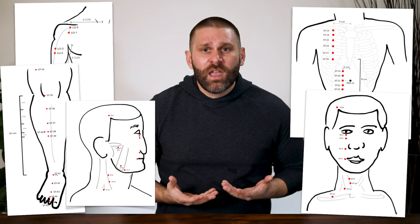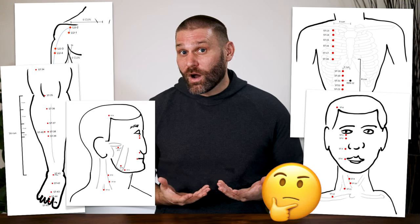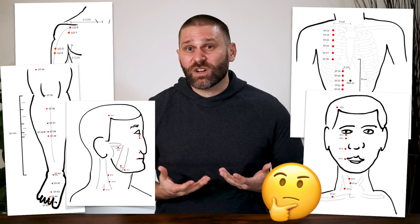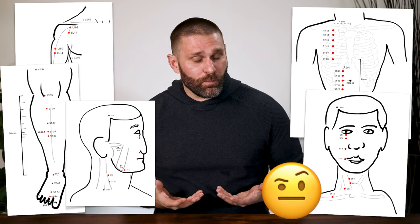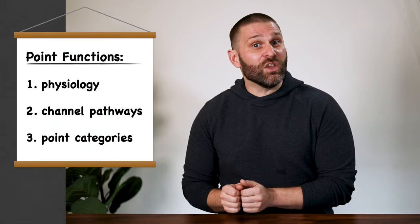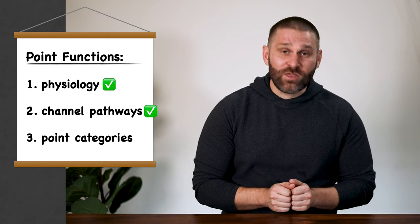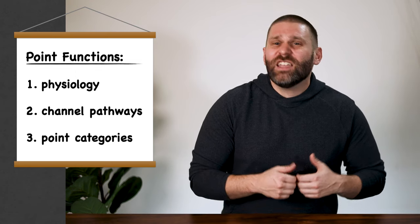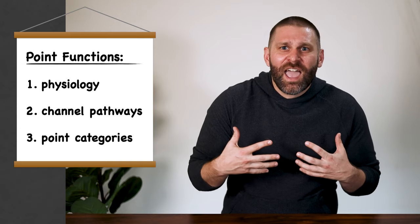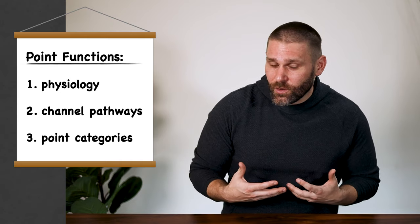In order to understand point functions, we're always going to try to relate it back to three things: number one, the normal physiology, or functions and characteristics, of the channel or organ; number two, the pathways of the channels; and number three, the category to which the point belongs. There are 361 points on the 14 channels. If you try to simply memorize the functions and indications for each point, you're going to have a hard time. But if you understand the organ, the channel pathways, and the point category, you can start making connections and understand why the points do what they do. Let's get into the functions and indications of the points, starting with Lung 1.